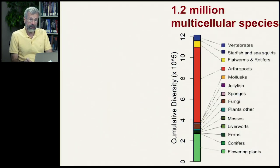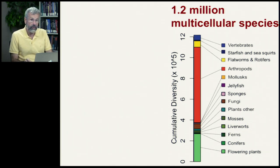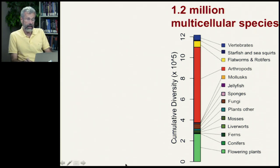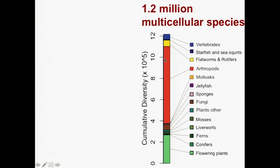Of all the multicellular species that we see on Earth today, there is extraordinary richness in some taxa more than others. You can see that out of this large number of different species, we have a few vertebrates up here at the top, some starfishes, various different kinds of worms and rotifers, and a whole bunch of arthropods.